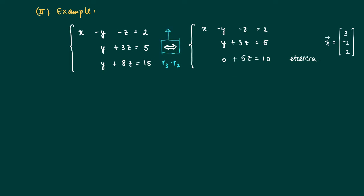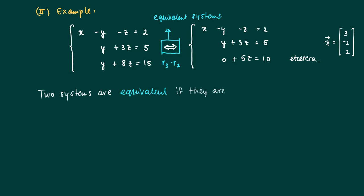We get a different system, and what we derived is exactly the system we've seen before, which can be solved by backward substitution. The important thing is that we have equivalent systems here. Two systems are equivalent if one allows the following operations — for instance, interchanging rows: swapping x minus y minus z equals 2 with the second row does not affect the solution.